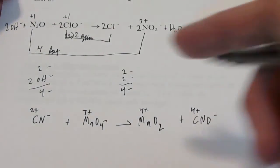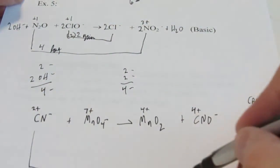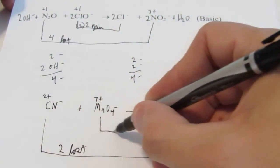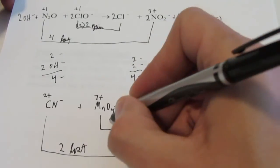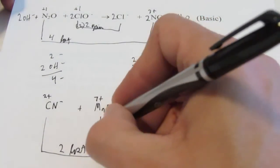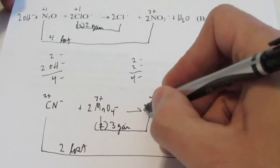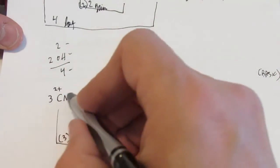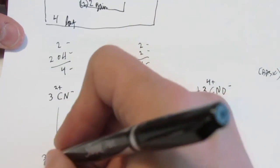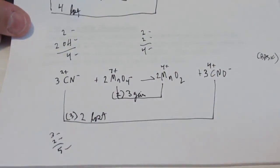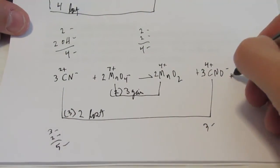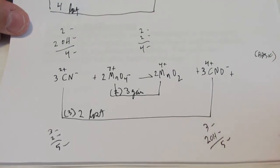Manganese and carbons are balanced, so let's do electrons gained with lost. Carbon goes from 2⁺ to 4⁺ — two were lost. Manganese goes from 7⁺ to 4⁺ — three were gained. We'll double the manganese species and triple the carbon species. Let's balance the ionic charge: three negatives and two more negatives gives five negatives on the reactant side. CNO⁻ gives three negatives on the product side. We're going to add two OH⁻ to balance the charges — this is basic.